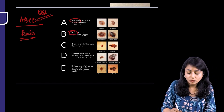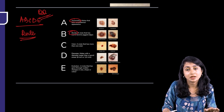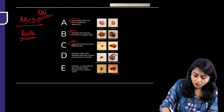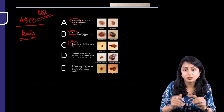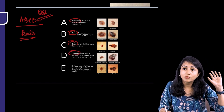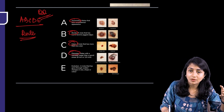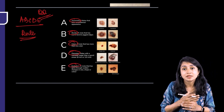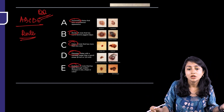Look at the border of the moles — are the borders having jagged edges? That's suspicious. Look at the color — are there different colors in a single mole? Look at the diameter — is it more than that of an eraser, i.e., more than 6 mm? And evolution — is there a sudden increase in size, shape, or color of the mole?